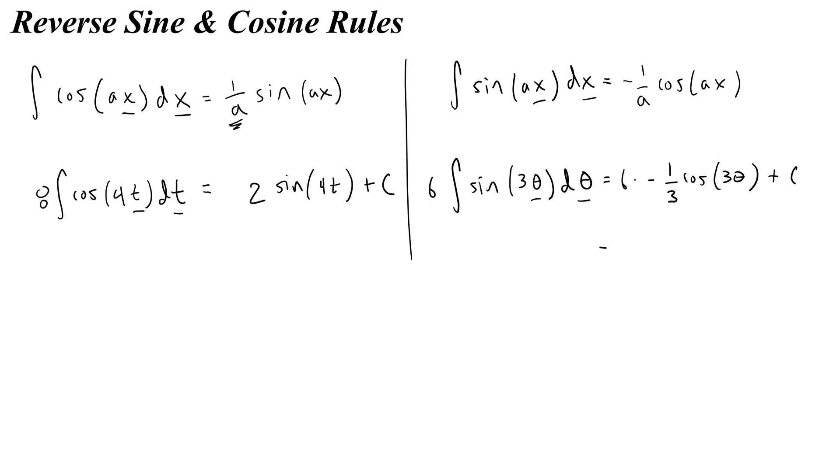And of course the whole thing plus c. Well, 6 times negative 1 third is the same as saying negative 2 cosine 3 theta plus c. So that's how you use that rule.